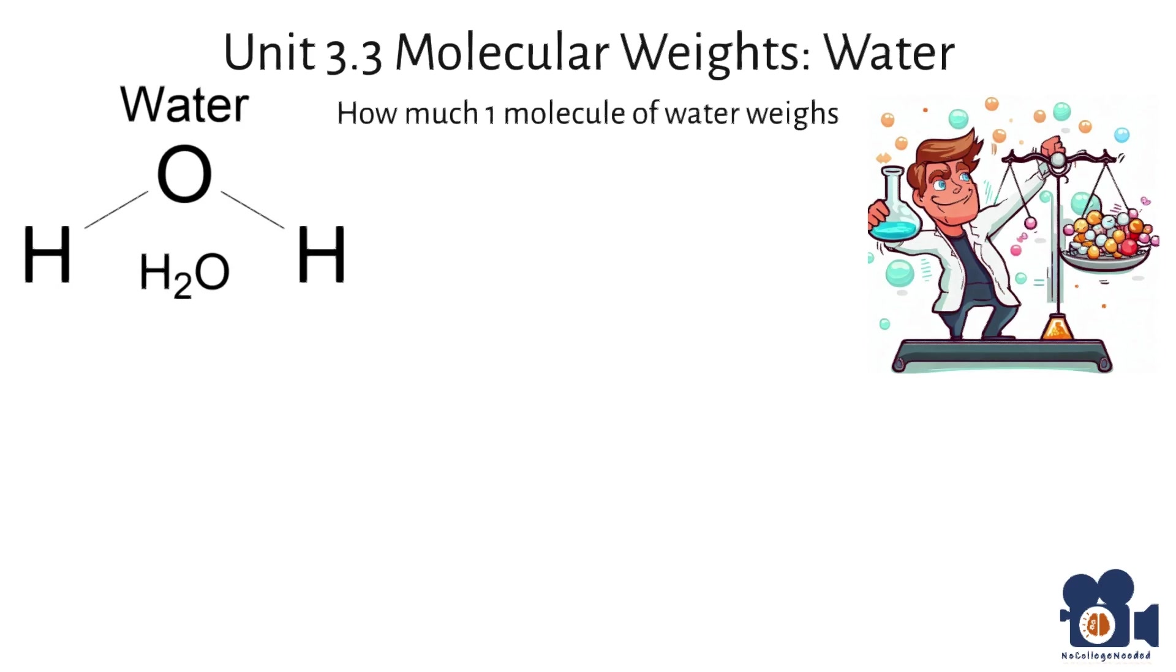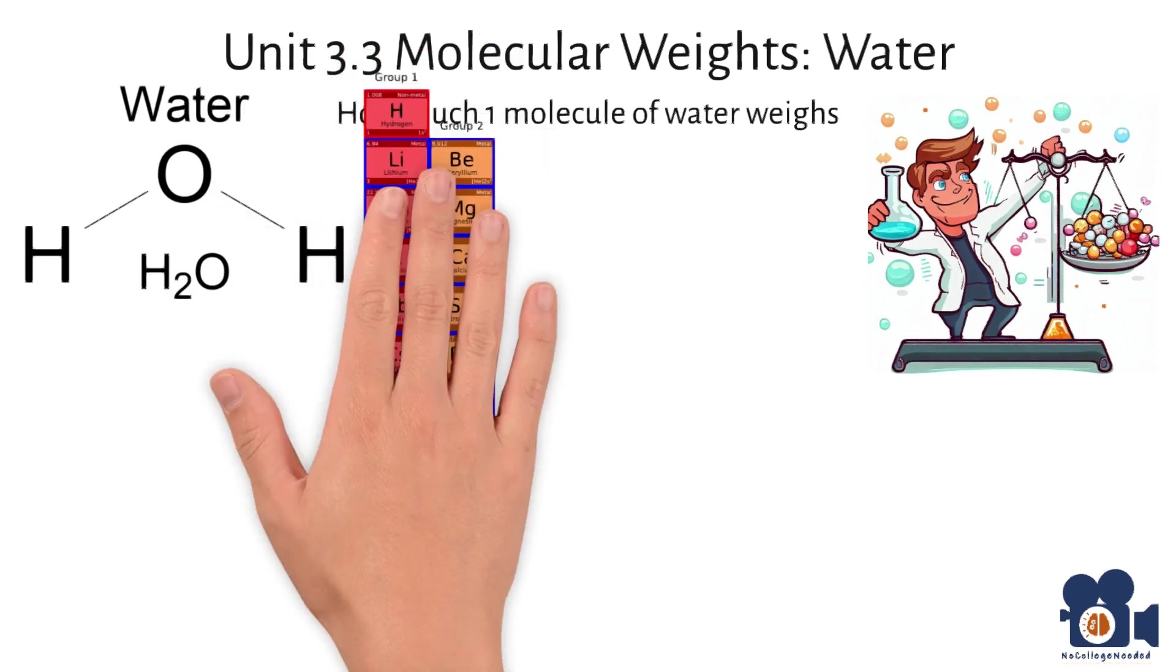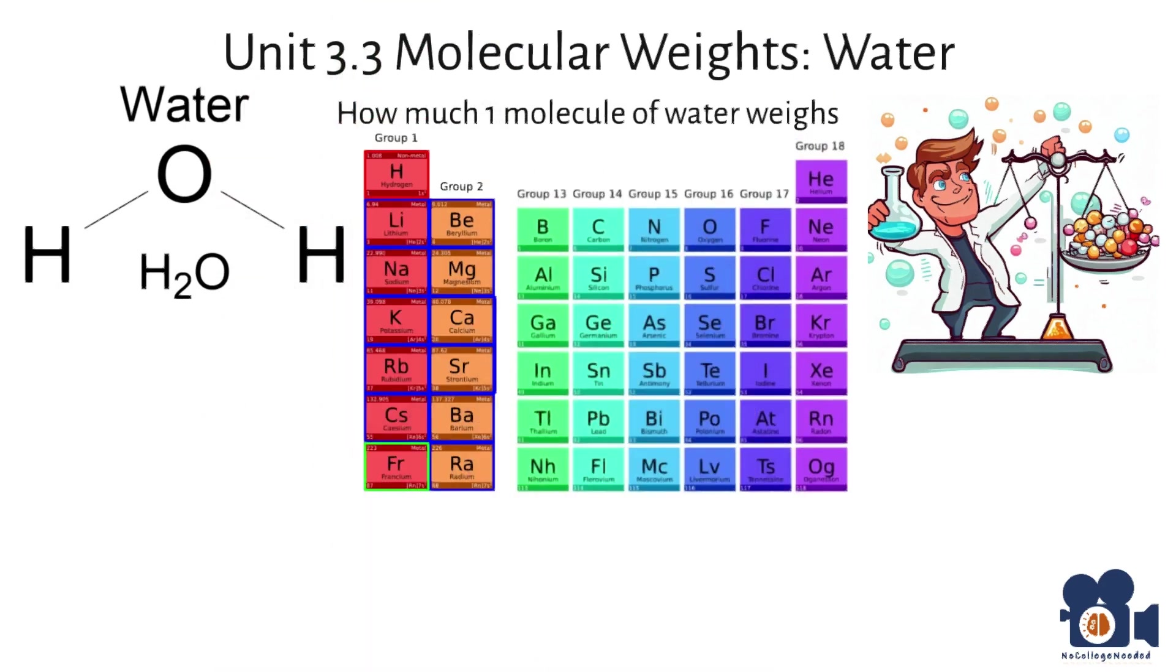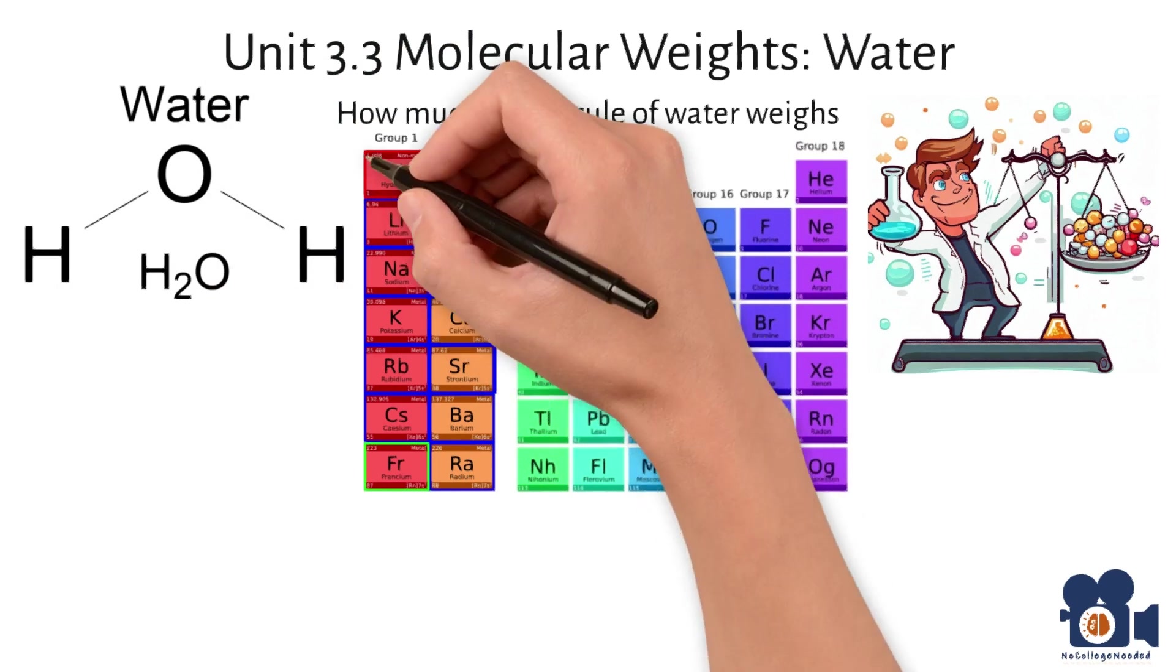To determine the molecular weight of a substance, we look at the periodic table to get the corresponding AMUs for the elements in the molecular formula. For water, there is hydrogen and oxygen.